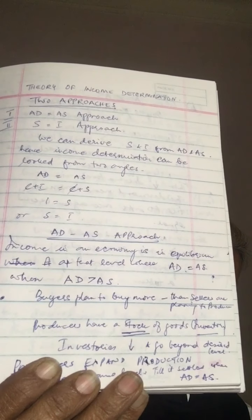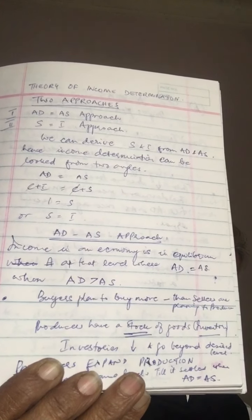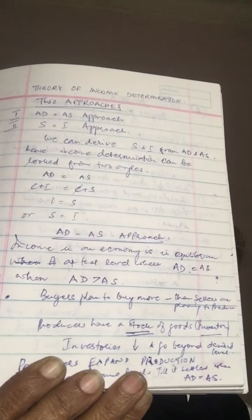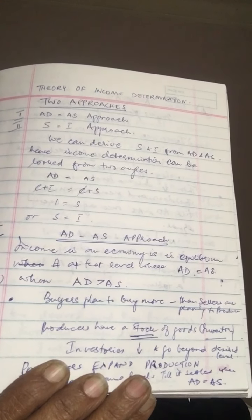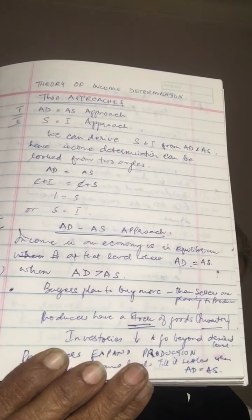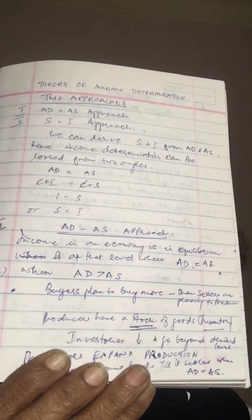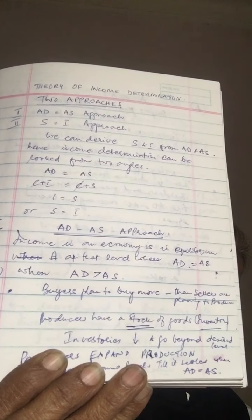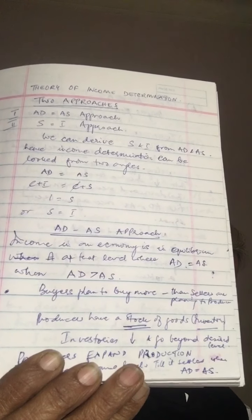So the above derivation shows that the basic equilibrium condition AD is equal to AS can also be expressed as saving is equal to investment. This gives two approaches: that is AD-AS approach and saving and investment approach.